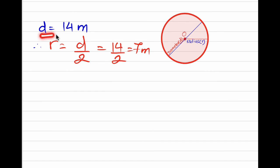So d is the diameter, which is 14 meters. The radius is diameter divided by 2, which gives us 14/2, equal to 7 meters.